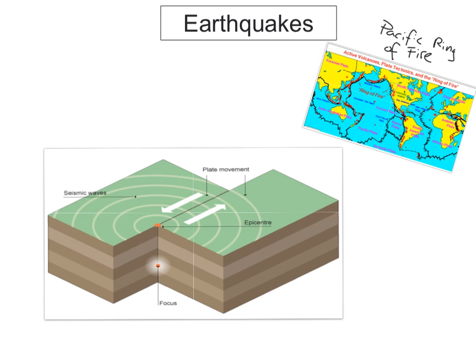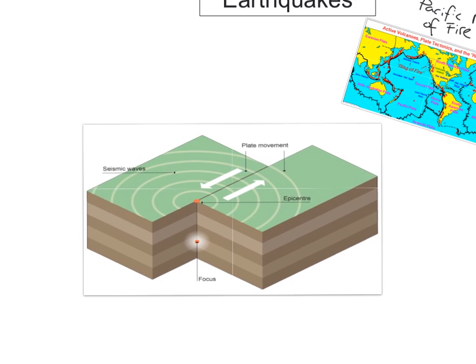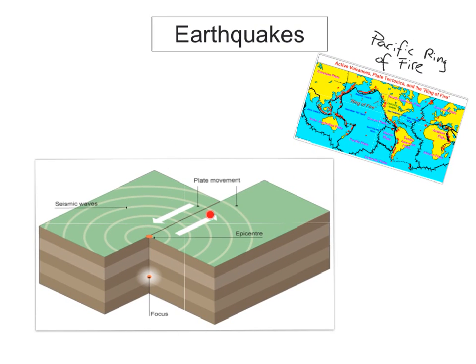At a transform or conservative plate boundary, the plates can be moving in opposite directions, creating a big build-up of pressure. The plates can also be moving in the same direction, but one plate moving faster than the other. At a conservative plate boundary, there's a big build-up of pressure, and when the plates slip or move past each other, that pressure release causes an earthquake to happen.